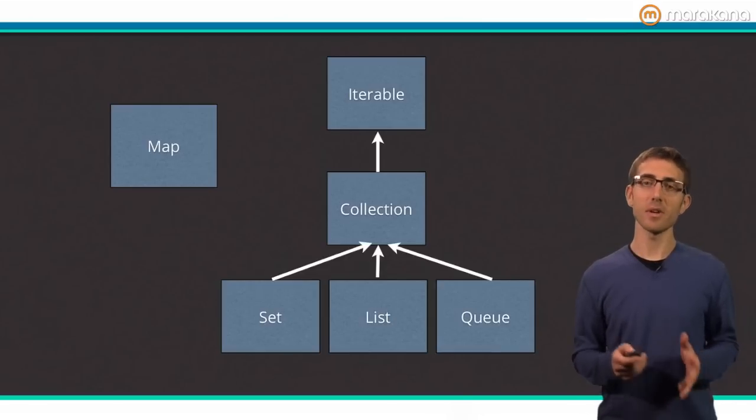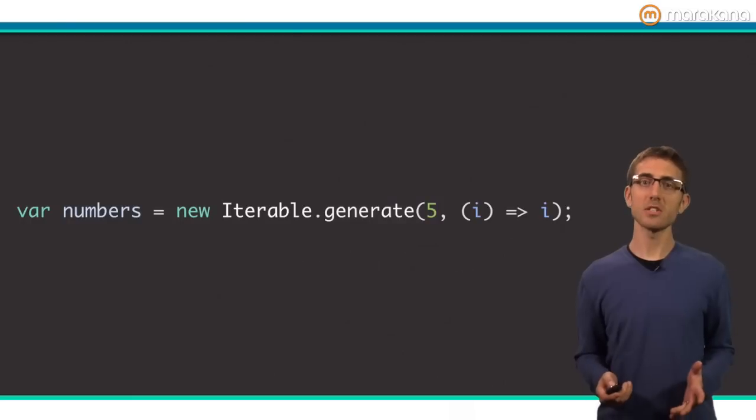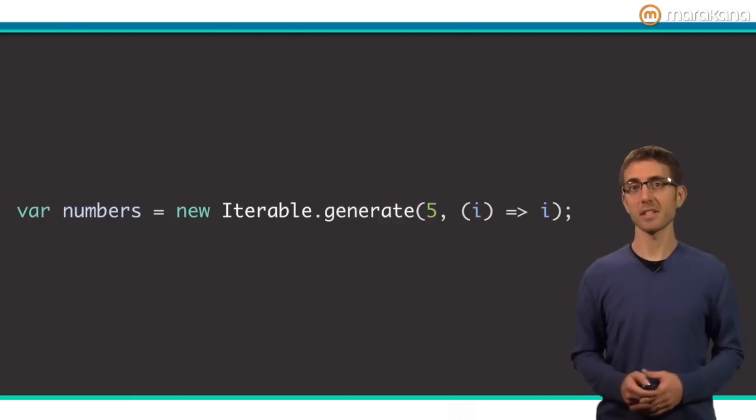You can see that map doesn't extend or implement collection, but it's an honorary member of the useful collection type and add classes. We'll talk about each collection class in turn, but let's start at the top, iterable.